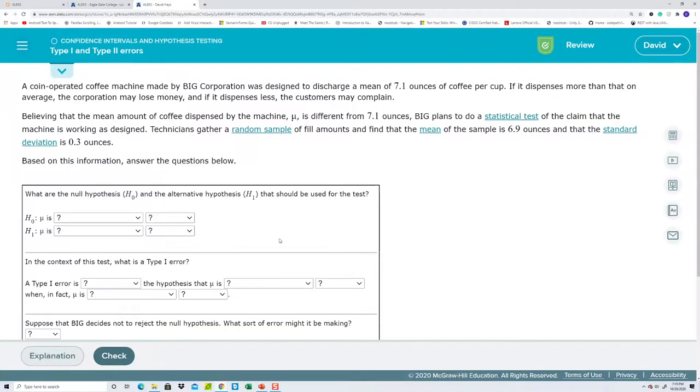Okay. Now, let me do maybe one or two more. Let's see. I'm looking for the claim. This is the hardest part sometimes, the reading of it. This is one I found very confused. I remember working this. That when they say down here, the claim that the machine is working as designed. Working as designed means it's charging 7.1. So I would say, assume the claim is mean is equal to 7.1.